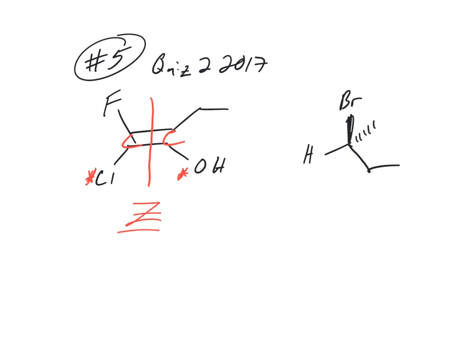And the two things that have highest priority on the same side, it's Z. If they're on opposite sides, it's E. Now for this one, it has nothing to do with E or Z. It's just R and S again. So you got to rank them. So what's the highest ranked thing? Bromine, so that'd be one. What's lowest ranked? Hydrogen. Ethyl versus methyl. Carbon, carbon. This is two. This is three. You got to figure out what it is. R or S. I don't know which one is it. I have S. Is that right? Use your models. Bring your models, use your models.